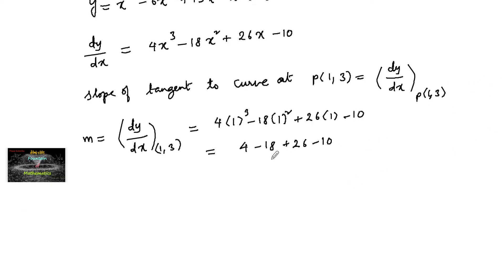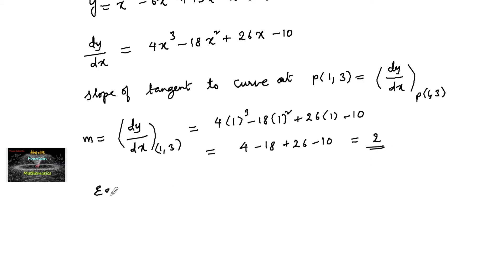So the slope of the tangent is m = 2. Since the tangent and normal are perpendicular, the slope of the normal will be -1/2.